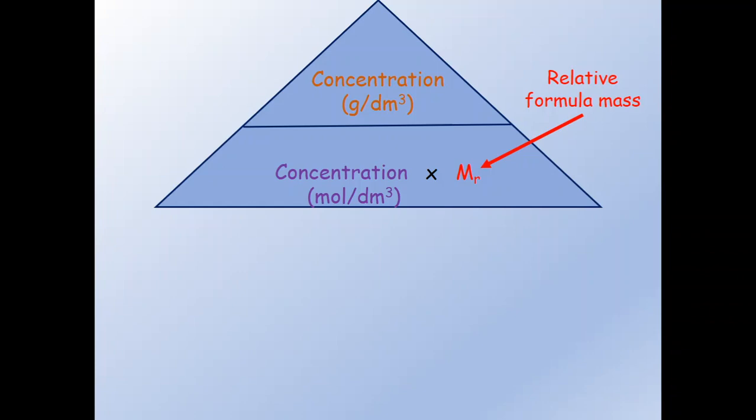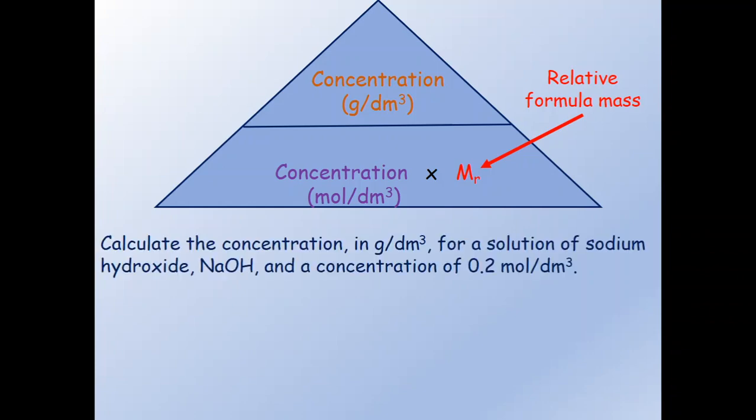Now let us look at an example question. Calculate the concentration in gram per decimeter cube for a solution of sodium hydroxide, NaOH, with a concentration of 0.2 mole per decimeter cube.